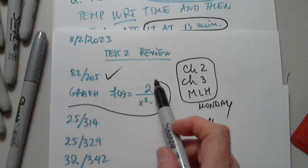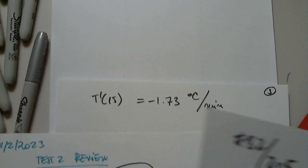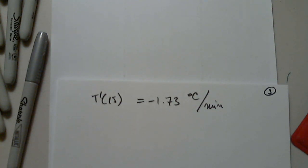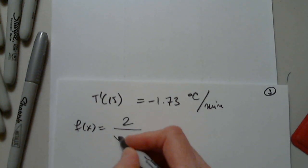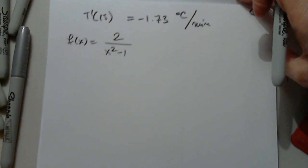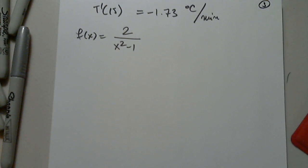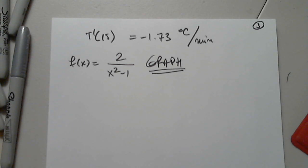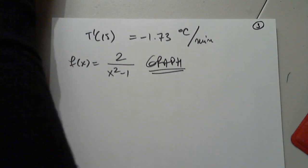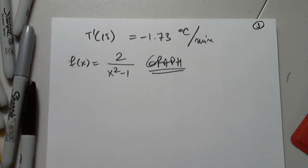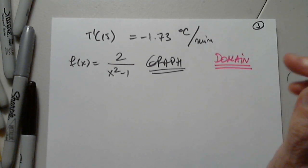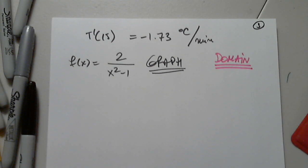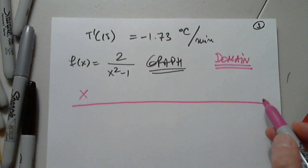The next question is how to graph. The function is f of x equals 2 over x squared minus 1. To start graphing, we need the domain first — I can't start without knowing where I'm going. Can anyone tell us the domain of this function?